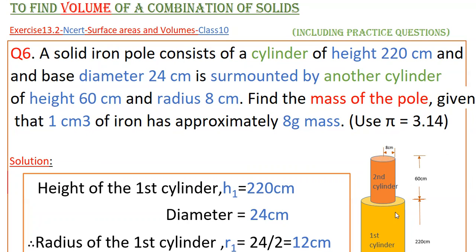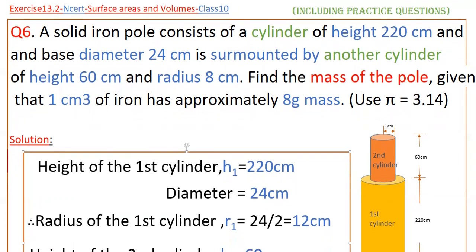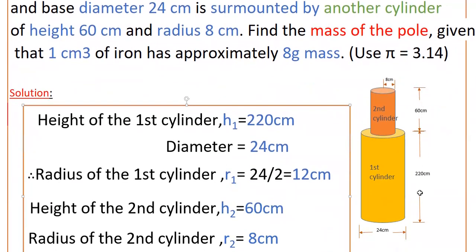The solid iron pole consists of two cylinders. The height of the first cylinder is 220 cm and diameter is 24 cm. The radius of the first cylinder is diameter by 2, that is 24 by 2, which equals 12 cm. Height of the second cylinder is 60 cm, and radius of the second cylinder is 8 cm.